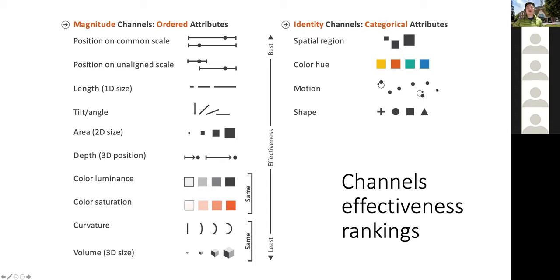Motion can be slightly difficult to implement, especially in software like Tableau unless you write your own code. Spatial region is very effective, but there is always a competition between the spatial region channel for categorical attributes and position for ordered attributes. If we use position to represent some ordered attributes like price or profit, then we can't use it to show categorical attributes as well. That becomes a design choice.